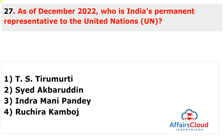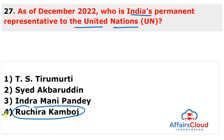Question 27: As of December 2022, who is India's permanent representative to the United Nations? The answer is Ruchira Kamboj. The UN Security Council's permanent representative to the United Nations is Ruchira Kamboj. The UN's headquarters are in New York, and the United Nations Security Council was founded in 1945.